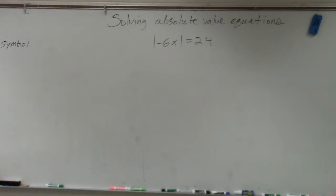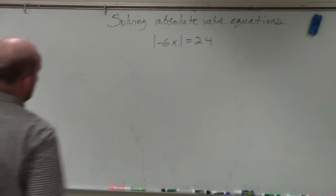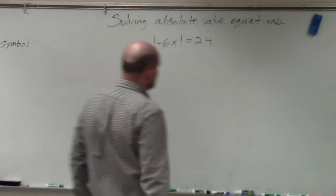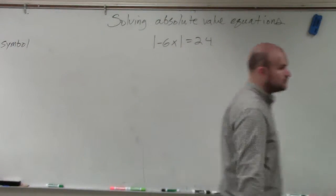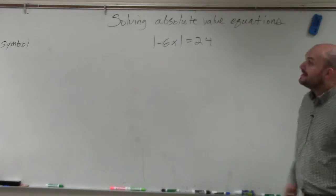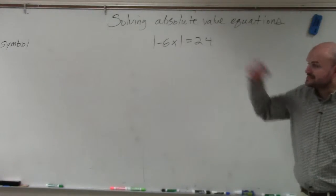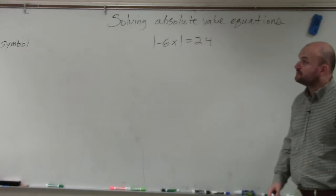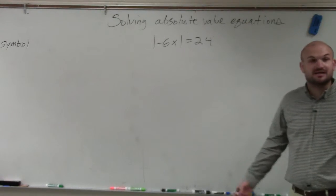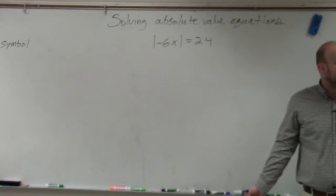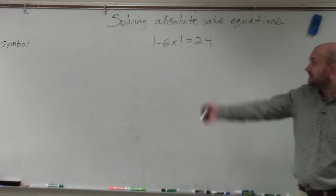In this example, ladies and gentlemen, we have absolute value of negative 6x is equal to 24. The first step in the process is to isolate the absolute value symbol.